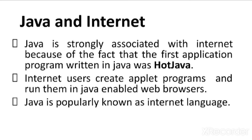Sometimes when you are connected to the internet, you get a message prompt saying 'Java is updated at the background.' That means your web browsers are taking Java updates in the back end. To run applet programs, which are Java programs, we require a Java-enabled web browser; one such web browser was Hot Java. Java is popularly known as the internet language because it was the first programming language used across the internet.